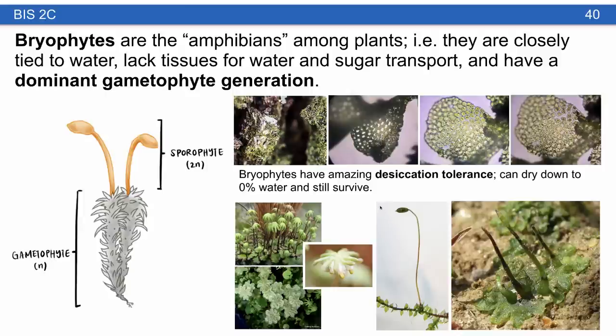Despite being closely tied to water for reproduction — sperm must swim through water to reach the egg — bryophytes have amazing tolerance to desiccation. They can dry down to 0% water and still survive. This characteristic is called poikilohydry, meaning the water content within a bryophyte matches the water content of its environment.